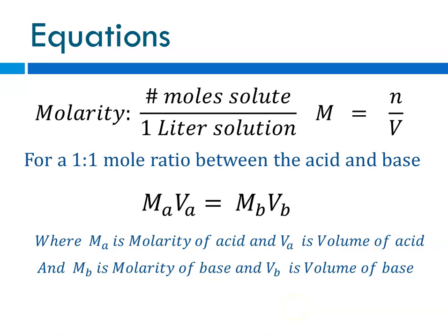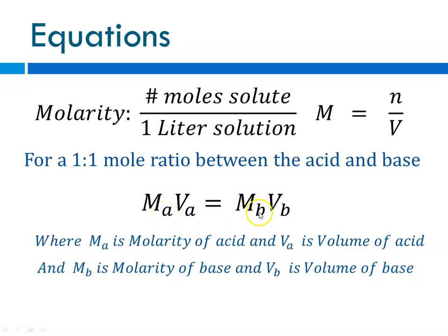When doing a titration, you have a known solution as your reference, which may be your acid or your base. You titrate using an indicator that tells you when you've reached an equivalent amount of acid and base. If you know the volume of acid used and the volume and molarity of the base, you can calculate the molarity of the acid, knowing that the equivalence point is where moles of H+ equal moles of OH−.